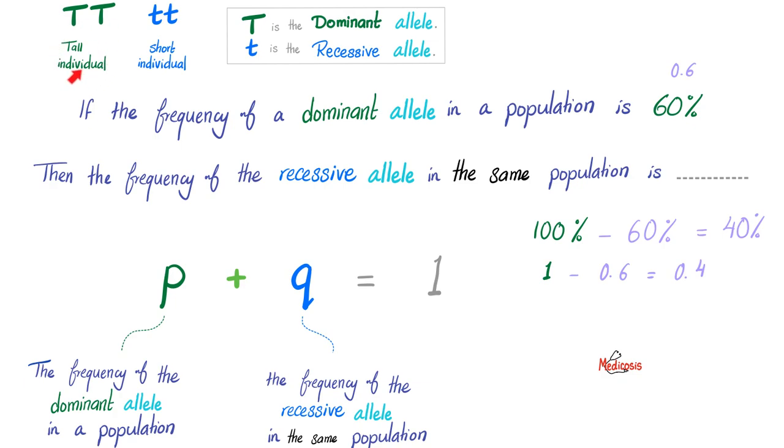Capital T, capital T. That's a tall individual. Small t, small t. Short individual. Therefore, the big T is the dominant allele. The small t is the recessive allele. As you know, allele is the copy of the gene, because you have two copies for each gene. One from mommy, one from daddy. Who's your daddy? Now suppose that I told you that the frequency of the dominant allele, capital T, in a population is about 60%. What do you think the frequency of the recessive allele is? Well, well, well. It has to be 100 minus 60 equals 40%. Look at you, my friend. Awesome. Genius. And how did you do that?